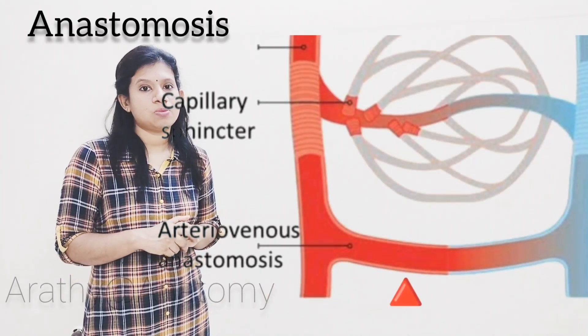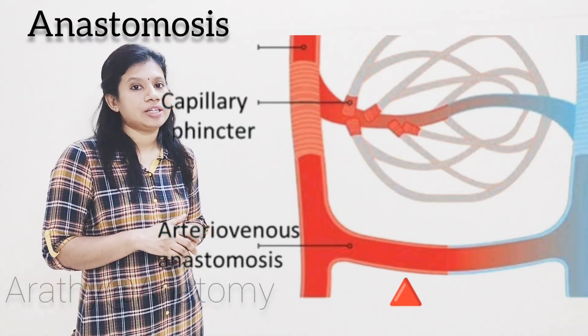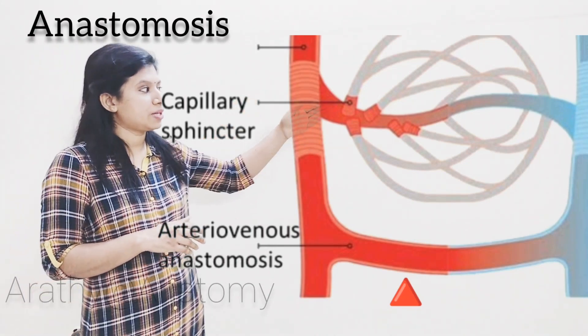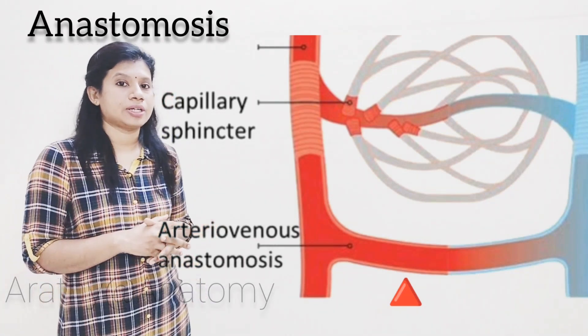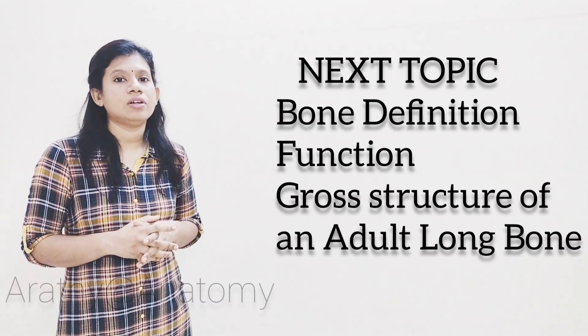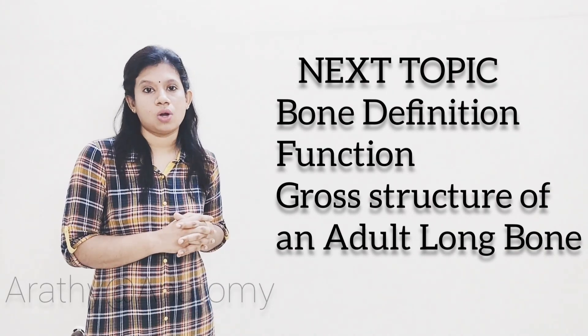The next one is called as anastomosis. Anastomosis means the precapillary or postcapillary communication between the vessels — as we can see in the diagram, the communication between the precapillary and postcapillary. That is all about today's video on the common terms used for explaining muscles and vessels. In the next video, I will be explaining about the definition of bone, the function of bone, and the growth structure of an adult long bone.